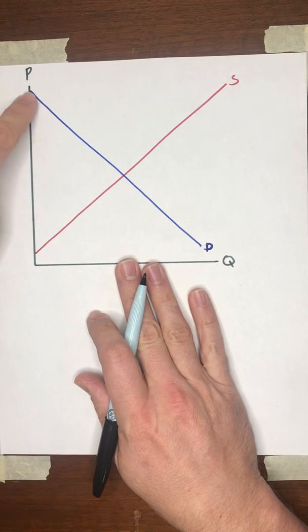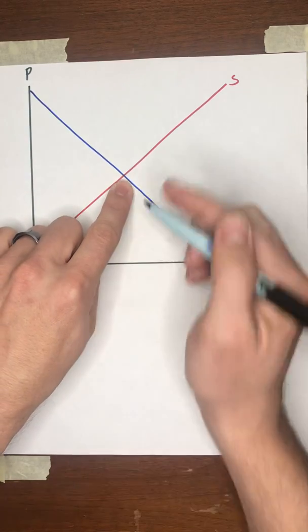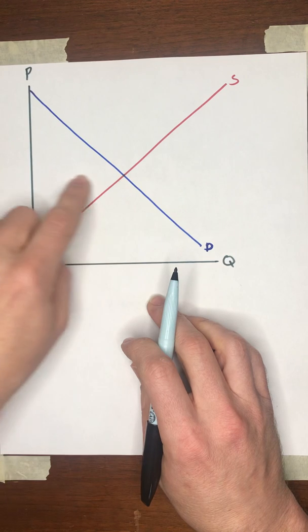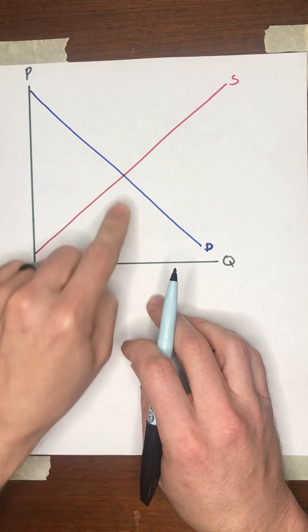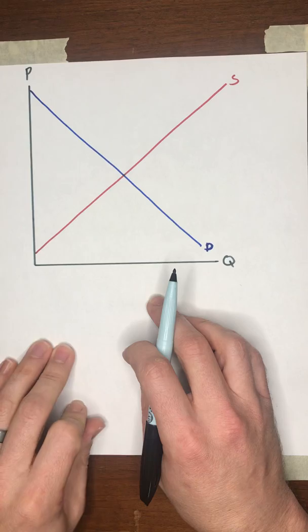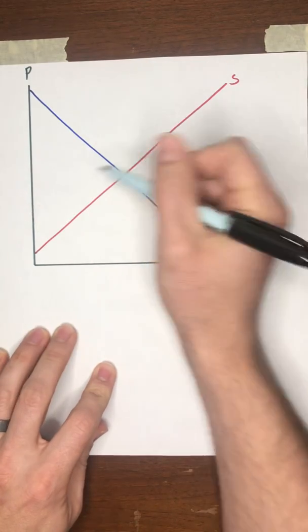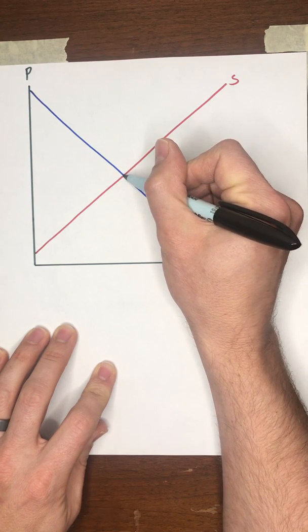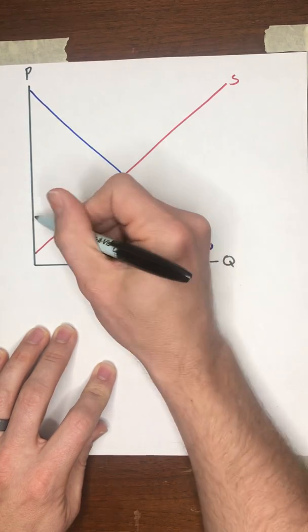Remember that under ordinary circumstances, if no one was controlling the price, we would expect the market to end up here at the intersection of supply and demand. That's going to be a price at which all of the units that buyers want to buy are going to be offered for sale by sellers. What happens when you have a price ceiling is that the government says, this equilibrium price is too high. For whatever reason, we want the price to be lower than that. And so they're going to legislate some price that falls below equilibrium.